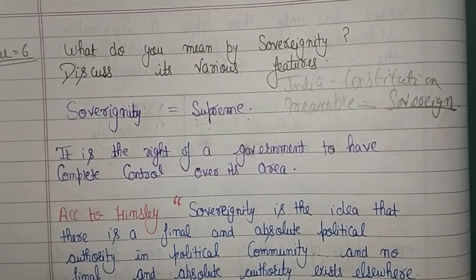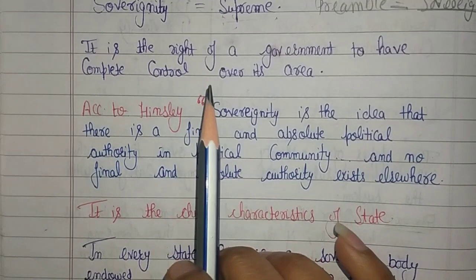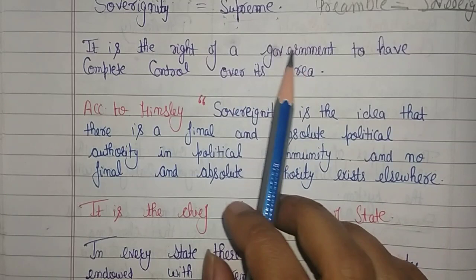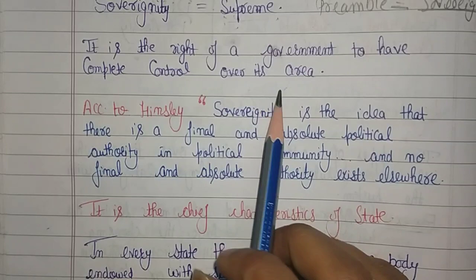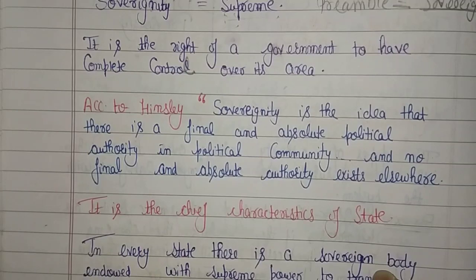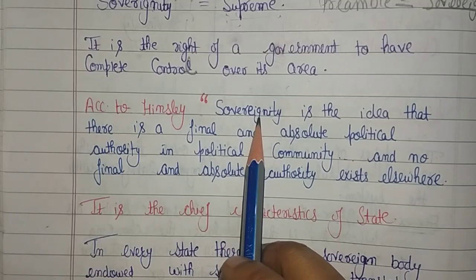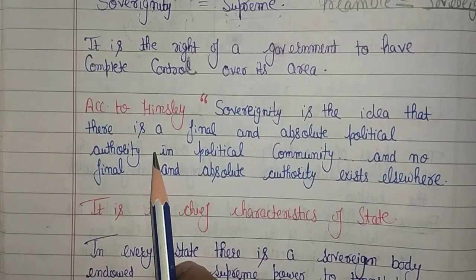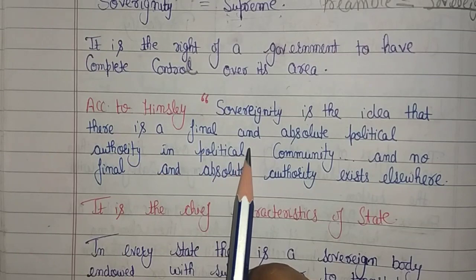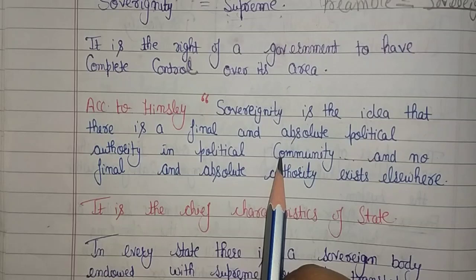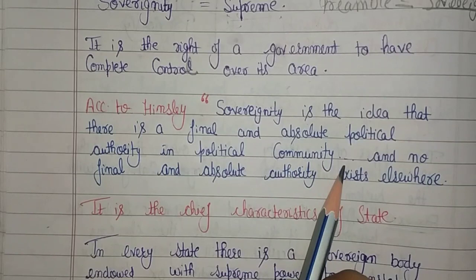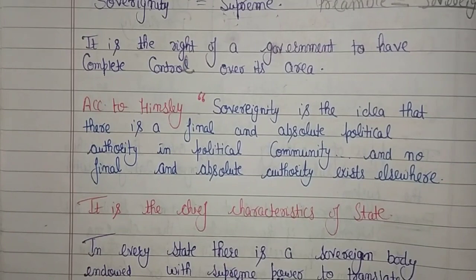Sovereignty के बारे में थोड़ा सा detail में देखना पड़ेगा — it is the right of a government to have complete control over its area. Government का right है कि जिस भी area में वो rule कर रही है, वहाँ पे complete control government का ही होगा। Sovereignty is the idea that there is a final and absolute political authority — final और absolute मतलब without any interference — एक political community की।